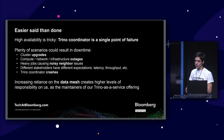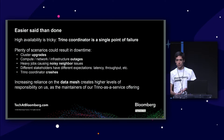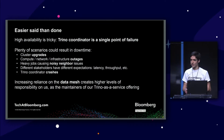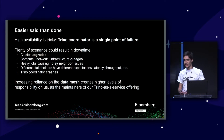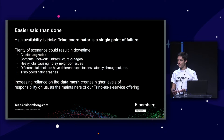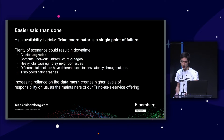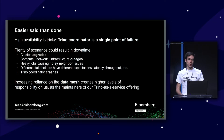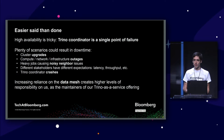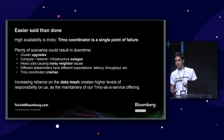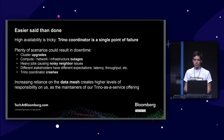You might have network issues, infrastructure issues, CPUs crashing, or ECC memory problems. You might also suffer from noisy neighbors — some tenants want high throughput at the expense of latency, while others want low latency for a few hundred rows. Keeping high availability so that no one is stepping on each other's jobs is not simple.